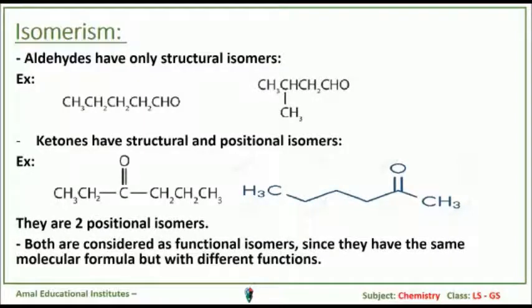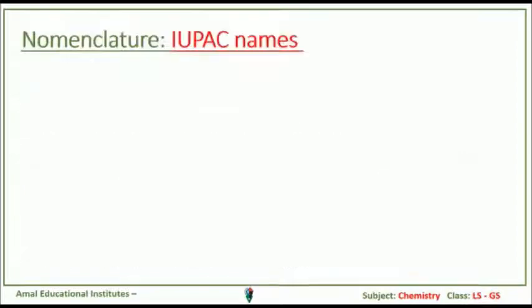Both aldehydes and ketones are considered as functional isomers since they have the same molecular formula but different functions. Now, nomenclature. Aldehydes are named alkanal.